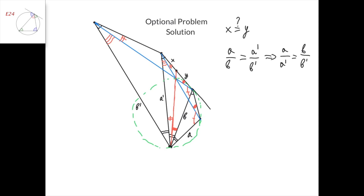Similarly, because of the alternate segments theorem applied to the circumcircle of this quadrilateral, we have that this angle equals this angle, and therefore this line is tangent to the circumcircle of this triangle, which is the circumcircle of the whole quadrilateral. Now let's consider the power of this point with respect to this circle. It is y squared, and it equals this times this. But this is coincidentally the power of the same point with respect to the other circle, because this times this also corresponds to the power with respect to the other circle. The power to the other circle is also x squared because this is a tangent line. Therefore, y squared equals this times this equals x squared, and so x equals y.